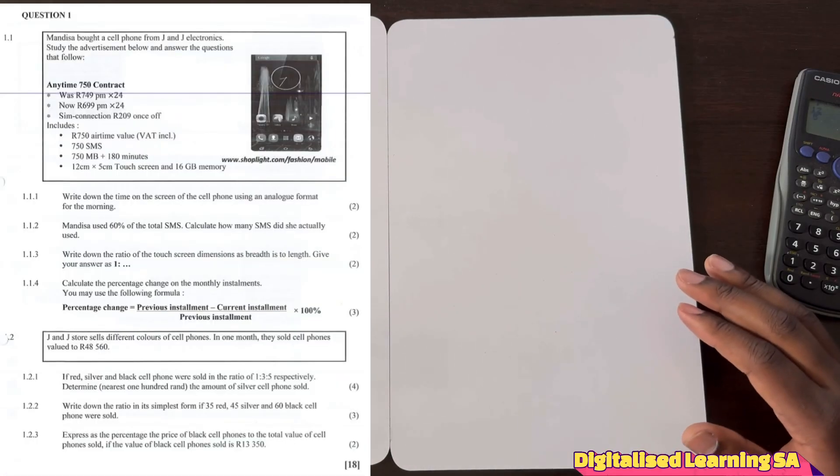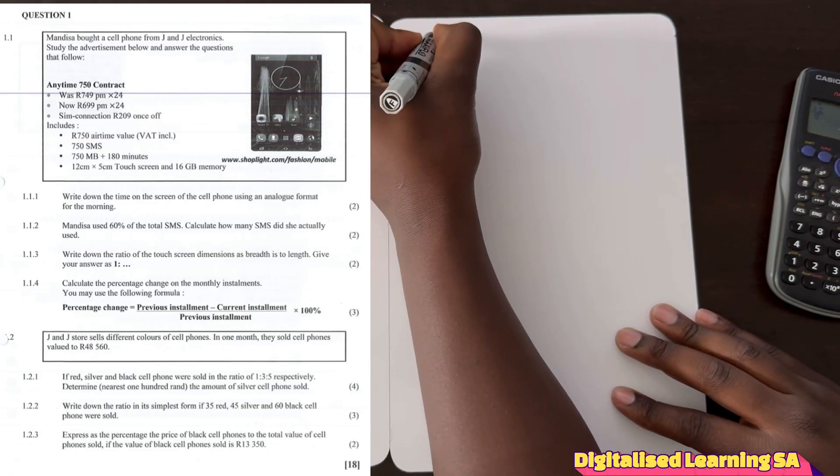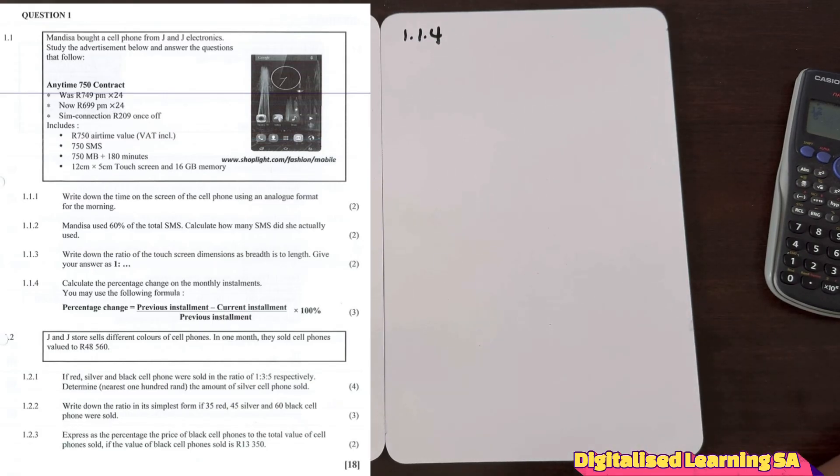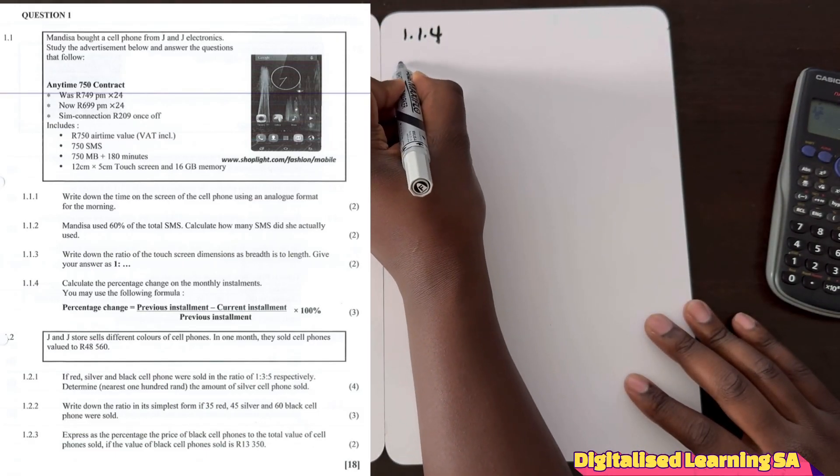So now let's move to 1.1.4. The question says calculate the percentage change on the monthly installments, and it says you may use the following formula. So we are given the percentage change formula.